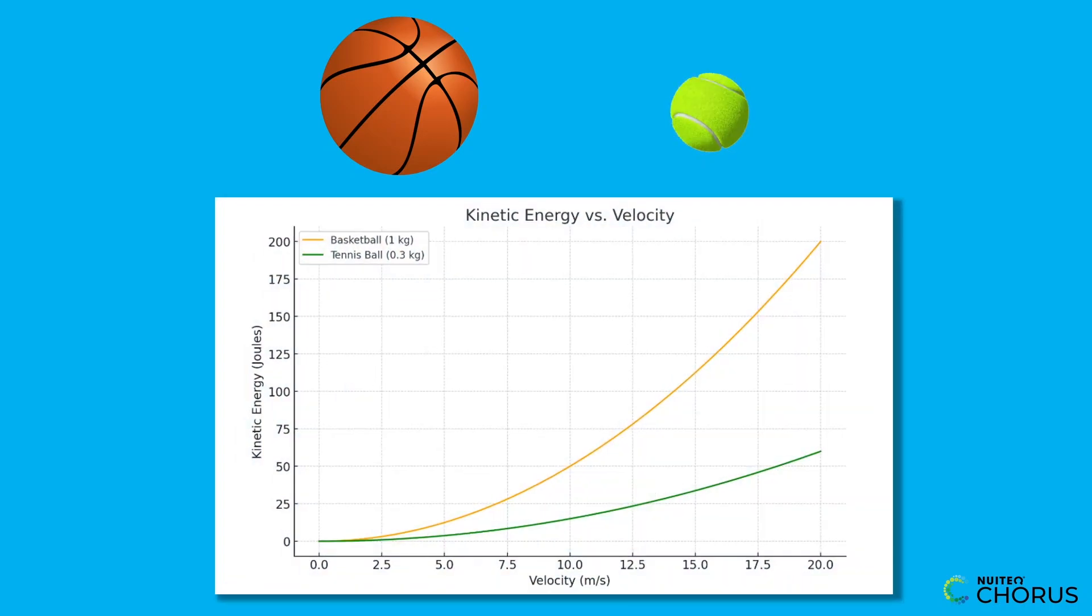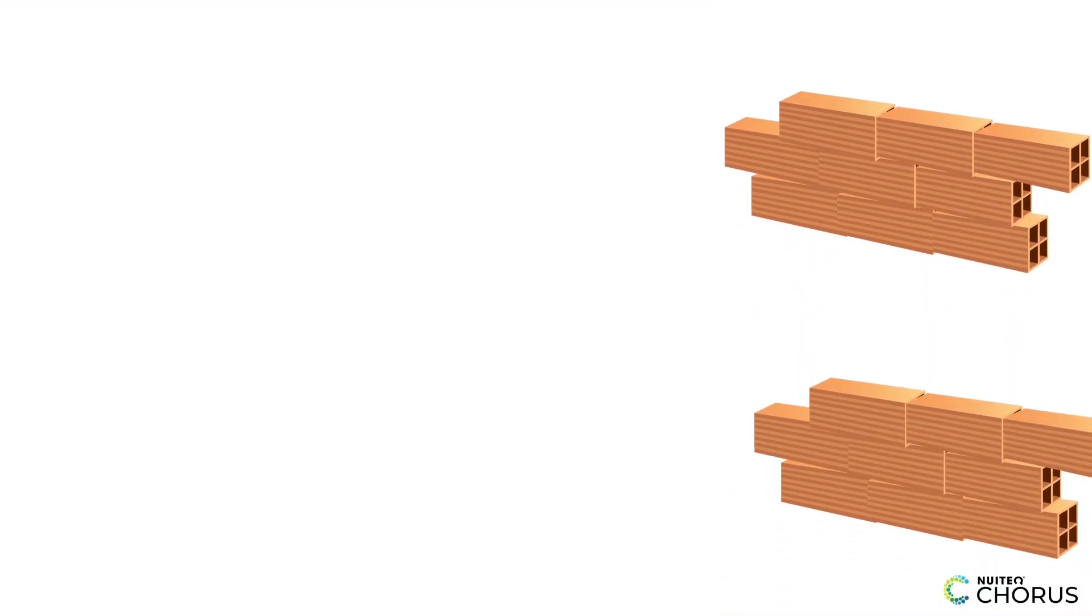Now let's measure mass and graph it. The basketball weighs one kilogram, the tennis ball only 0.3 kilograms. If we graph mass versus kinetic energy impact, we see a clear trend: more mass means more energy transferred to the cups. This idea applies in the real world too.